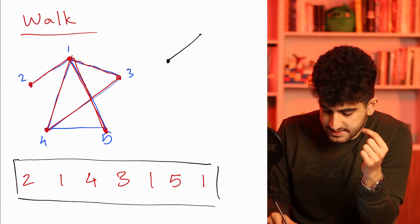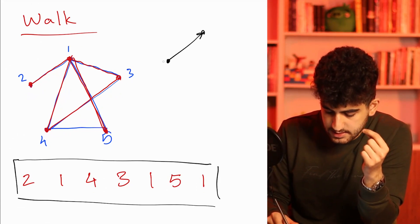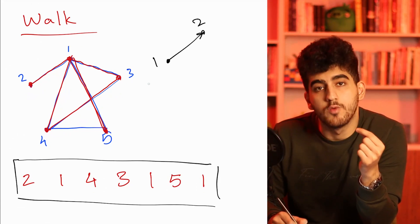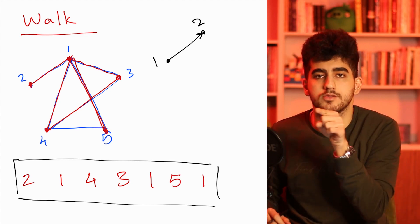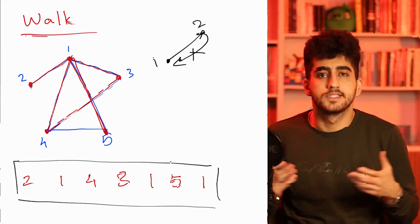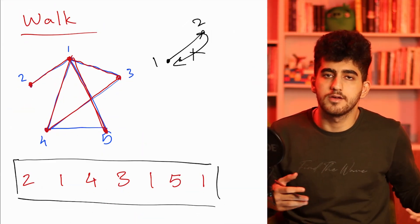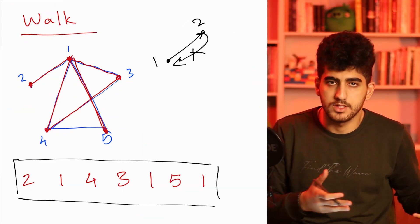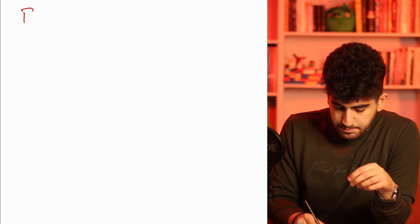Walks can also be defined in directed graphs. The only difference is that if you traverse an edge, you should go in that direction. For instance, if you have an edge like this, you cannot go from 2 to 1; you can just go from 1 to 2. So the definition is the same in the directed graph as well. The next definition is path.